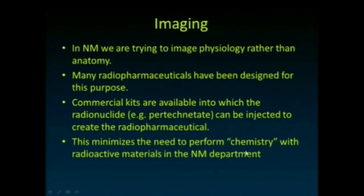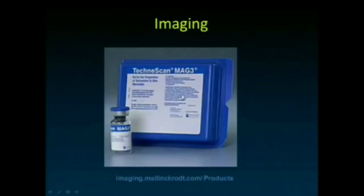This approach minimizes the need to perform complex chemistry with radioactive materials in the nuclear medicine department. For instance, MAG3 — one of the renal scan agents — is prepared by simply popping the vial top off and injecting the appropriate amount of pertechnetate in.